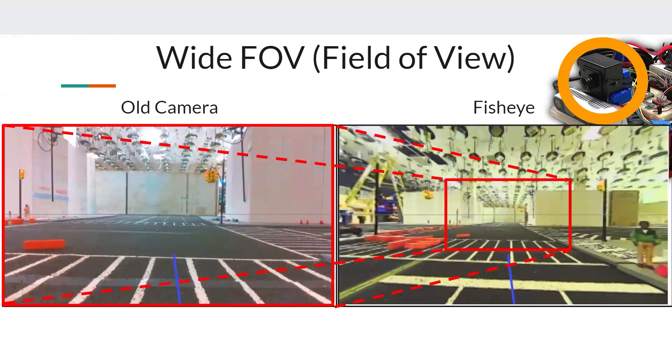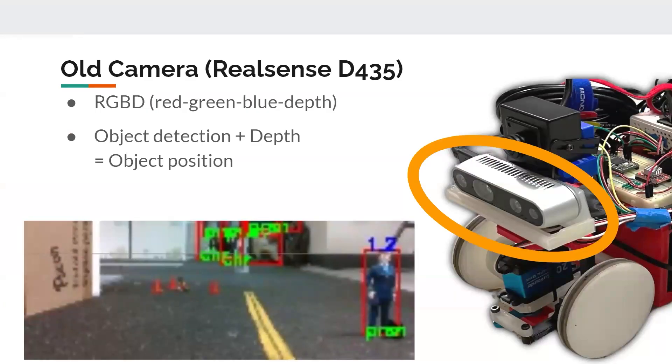And the reason why we use the fisheye camera is simple. If you look side by side with our old camera, you see you have a much wider field of view. So although we don't use the old camera now for our neural network, we can use it for object positioning. So combining the depth information that we get from the camera and object detection, we can achieve object positioning.